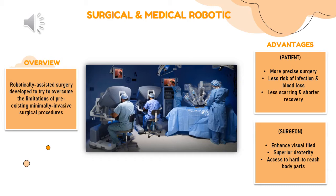Next is superior dexterity. A human hand can only move so much, but the robotic instruments exceed the dexterity and range of motion of the human hand, meaning the robot can do what is beyond human capability. The arms of the robotic instruments can rotate a full 360 degrees, which allows the surgeon to operate in a way that would be impossible without the robotic system.